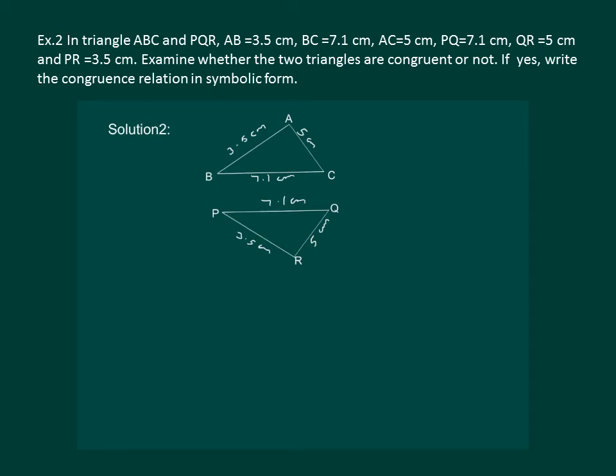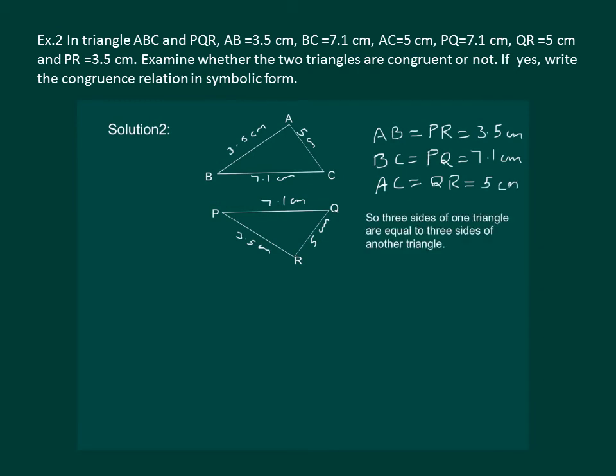So clearly we can see that here AB is equal to PR, which is equal to 3.5 cm. Then BC is equal to PQ and they are 7.1 cm. And AC is equal to QR, which is equal to 5 centimeter.